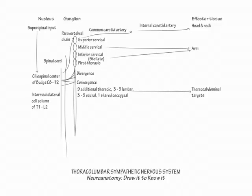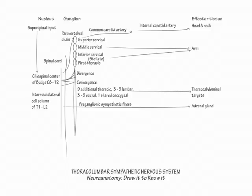First draw a bundle of preganglionic sympathetic fibers circumventing the paravertebral ganglia and synapsing directly in the adrenal gland. Note the adrenal medulla is derived from neural crest cells and mainly releases epinephrine, which is in the same class of neurotransmitters that the other postganglionic sympathetic neurons release.